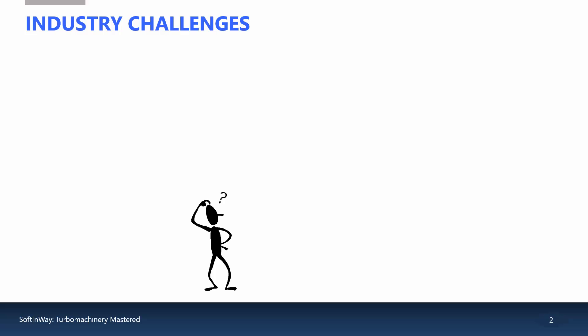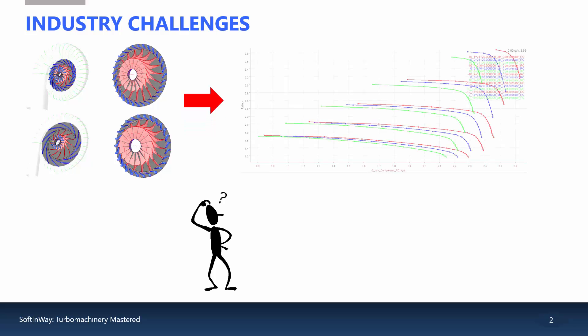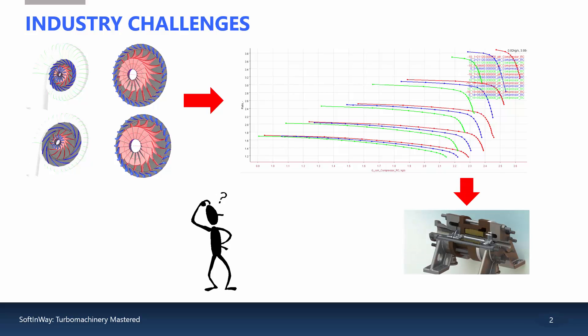Traditionally, maps have been used to quantify the performance of a given machine, a turbine for instance. However, regardless of the density of points calculated to obtain this map, there will always be some interpolation done when determining how the component will behave. For instance, the software may have to guess between different known speed lines and pressure ratios to determine what a turbine's efficiency may be.